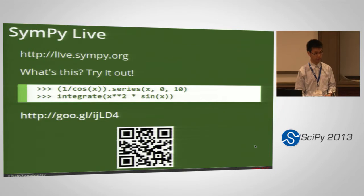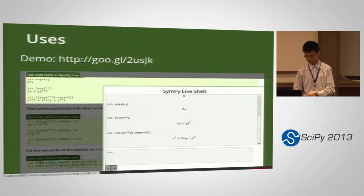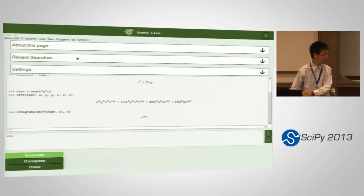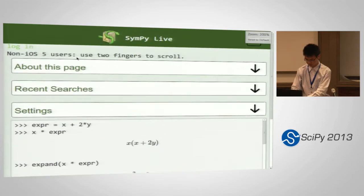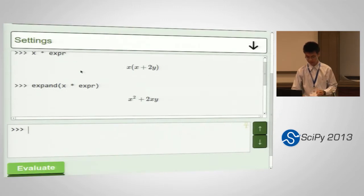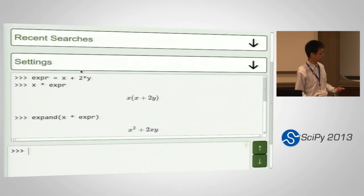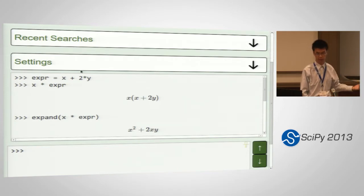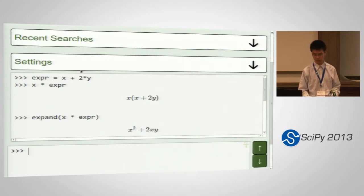If you scan the QR code, you'll see the mobile version in action. This is the mobile version of the website — I'm using it because it's easier to read on the projector. It's basically just a Python console with the same formatting and interface, but as you can see, the output is run through LaTeX first. That way it's nicer formatting and easier to read.